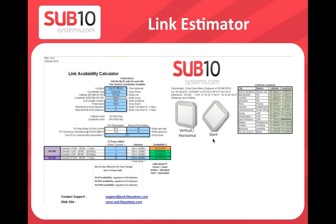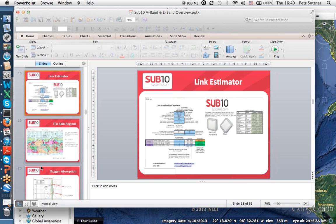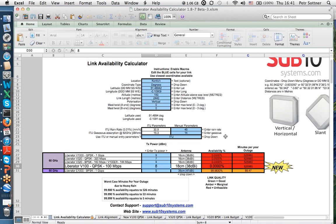The link calculator is available for download from our website. Check periodically for updated versions. It's an Excel file — enable macros. Blue fields are editable. Enter your parameters and the calculator computes link availability. The next sheet shows more detailed calculations.